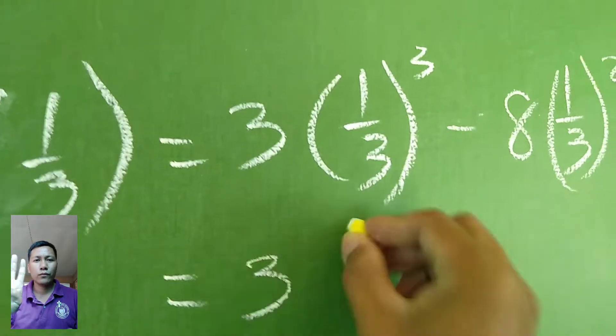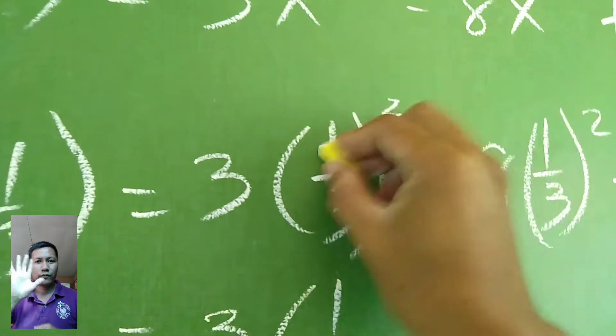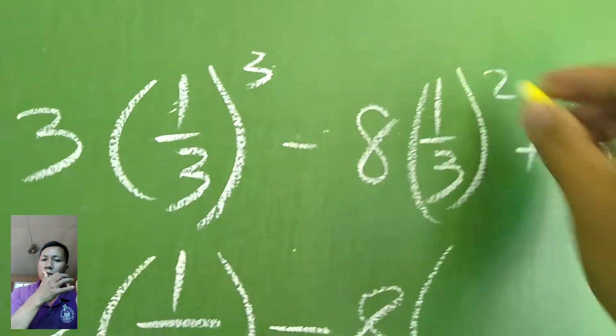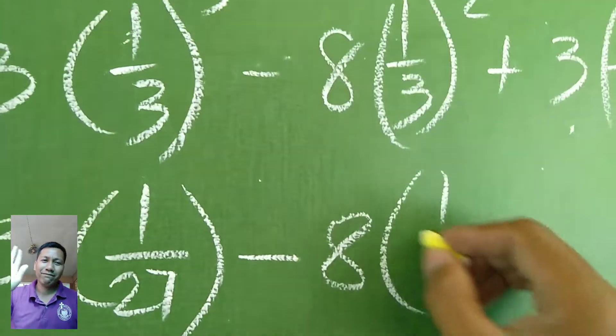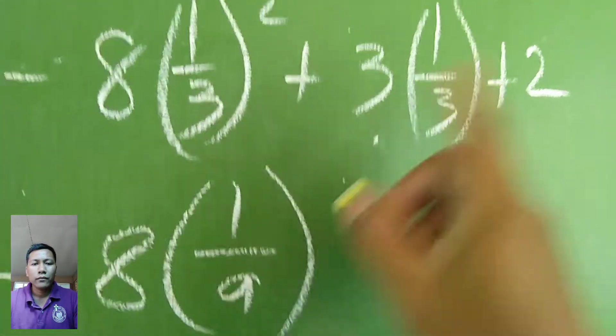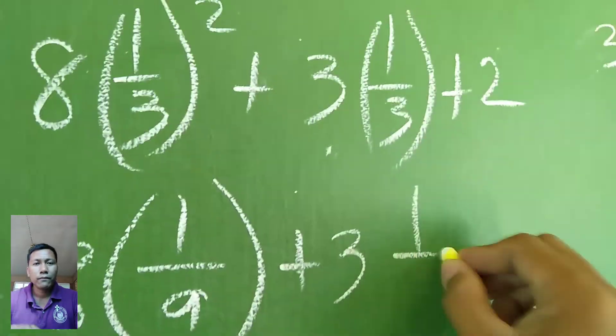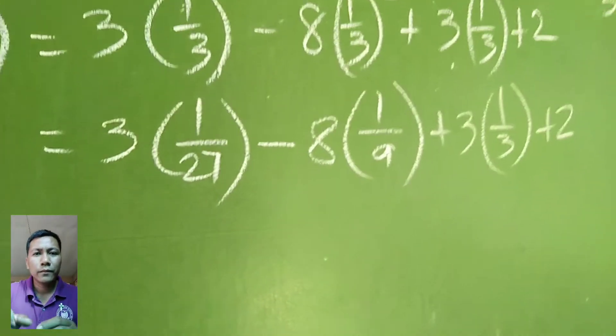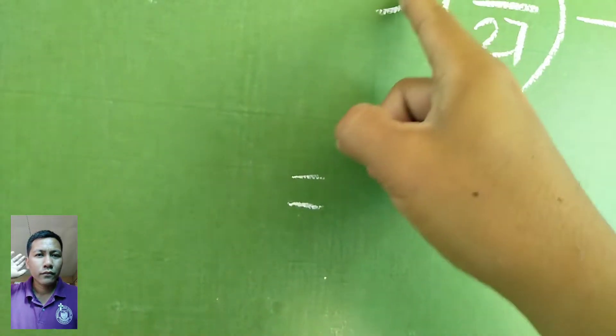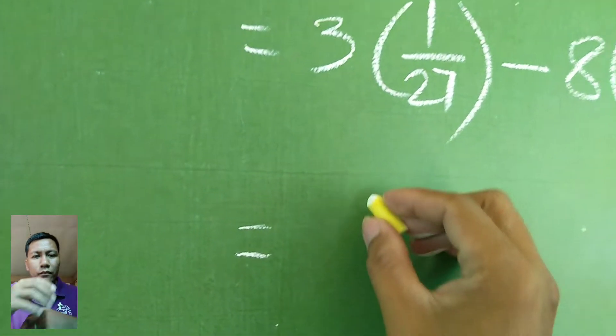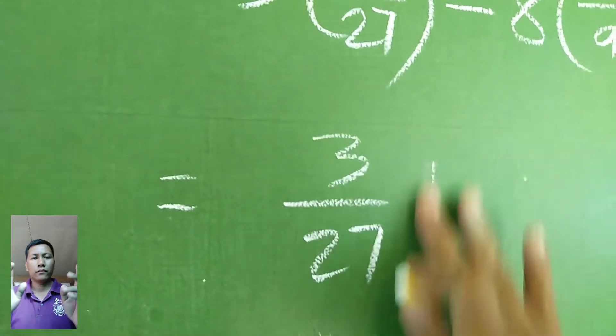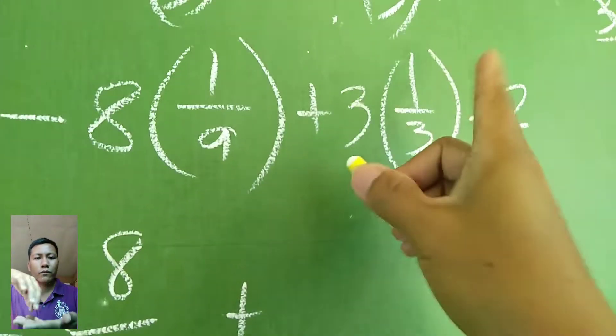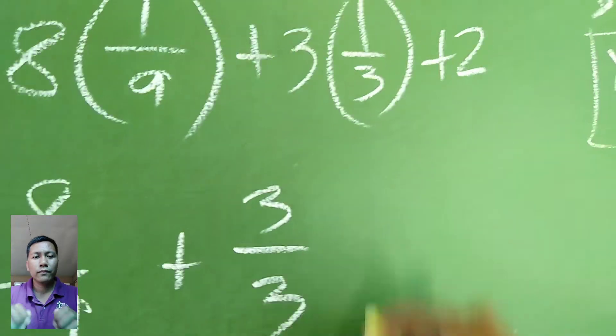PEMDAS. Exponent first, parenthesis. So we have equals to 3, 1 cubed is 1, 3 cubed is 27, minus 8, 1 squared is 1, 3 squared is 9. And then here we have 3 times 1 third plus 2.